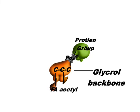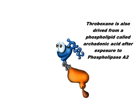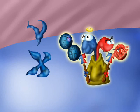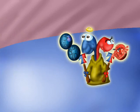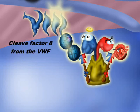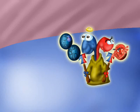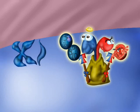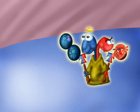Thromboxane is also derived from the phospholipid arachidonic acid after exposure to phospholipase A2. Thrombin, having been activated by factors 5 and 10, reciprocally activates any inactive factors 5 and 10. It also cleaves factor 8 from von Willebrand factor to enable further production of factor 10, and additionally activates factor 11.